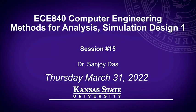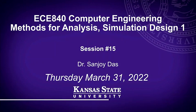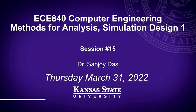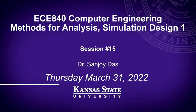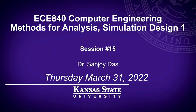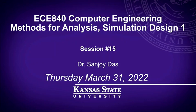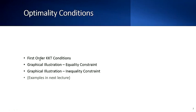We've already seen what the KKT conditions are, and now we will look at the graphical illustration of the optimality conditions. We'll briefly go over the first-order KKT conditions, graphical illustrations for the equality constraints, and then graphical illustrations for the inequality constraint. Examples will be done in the next lecture.